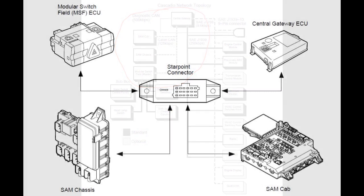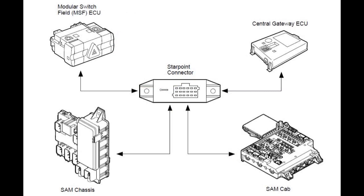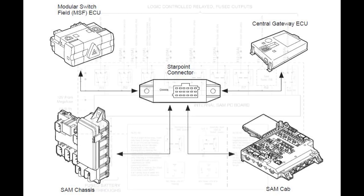The SAM chassis uses inputs such as switches, sensors, and datalink messages, and drives outputs such as lights, motors, and solenoids. It powers and controls everything from exterior truck and trailer lighting to electrically controlled diff locks. It provides power to other cab-mounted modules such as the ABS.